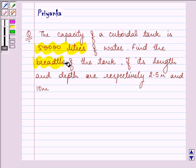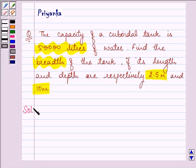Find the breadth of the tank if its length and depth are respectively 2.5 meters and 10 meters. This is a direct question in which the knowledge of volume or capacity of a tank should be known to you.